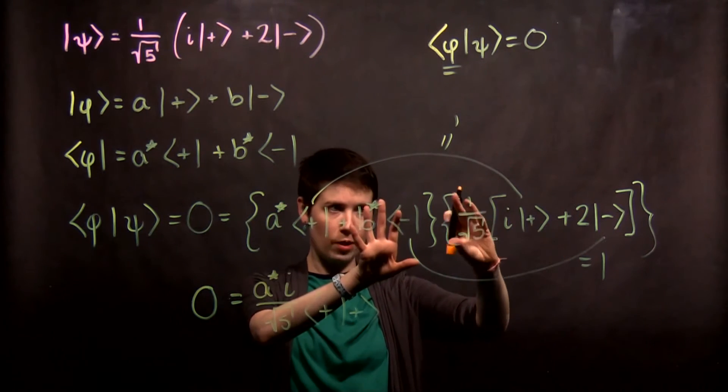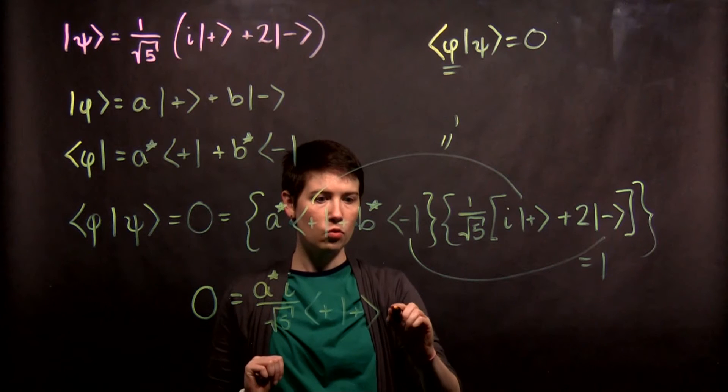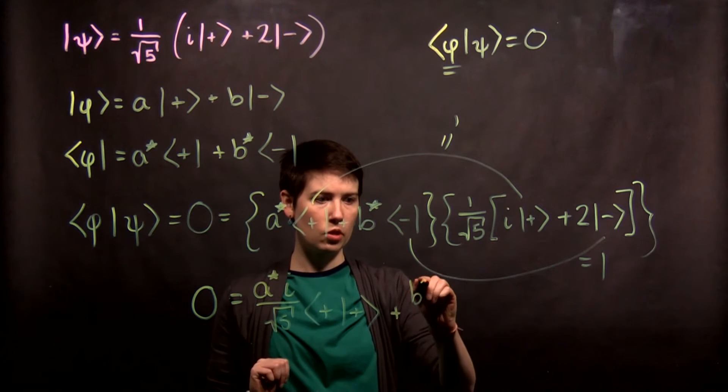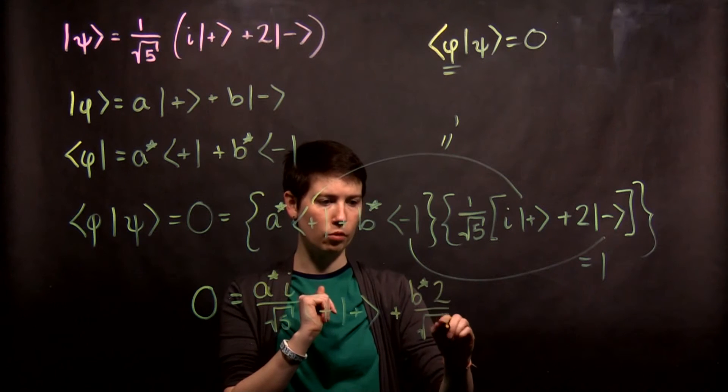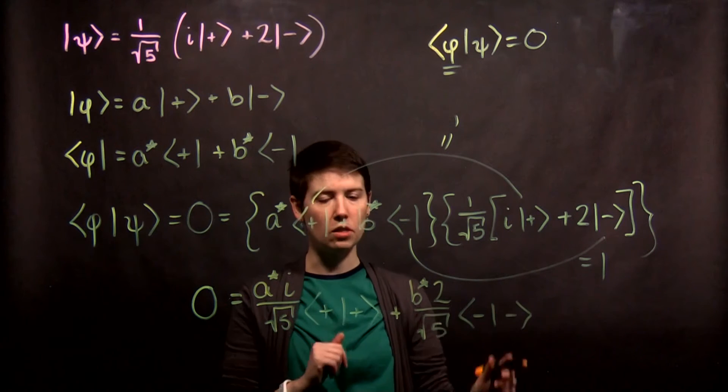Again, don't forget about this 1 over square root of 5. So I have plus b star 2. Switching the order would be fine if you prefer that. Minus, minus.